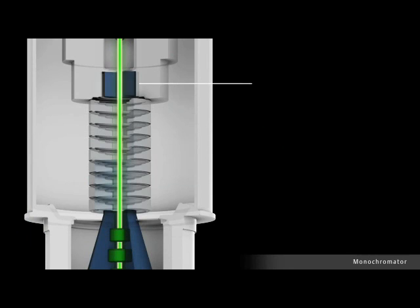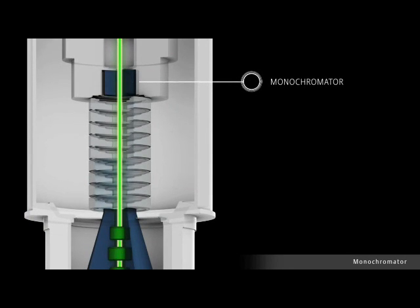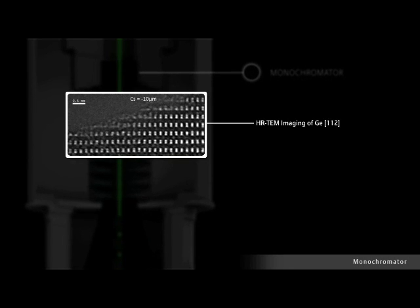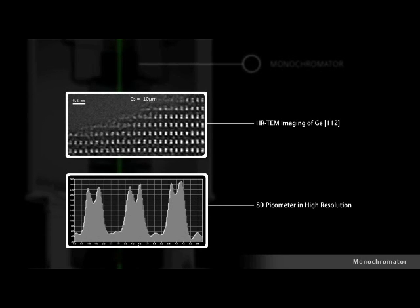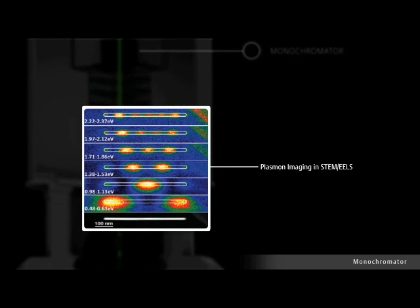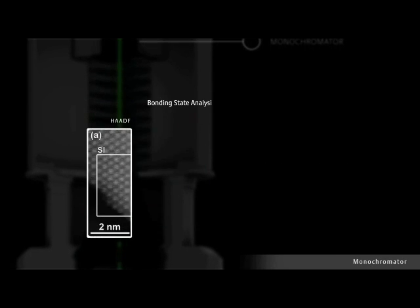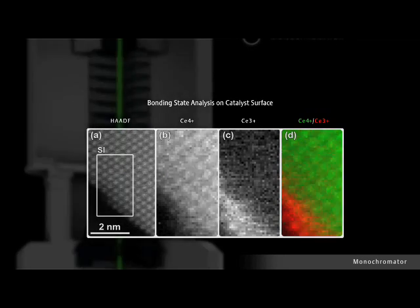Below the electron source is the monochromator, which narrows the energy spread of the electron source down to as low as 100 millielectron volts. This boosts the lateral resolution and high-resolution TEM imaging to 70 picometers and enables the spectroscopic study of electronic structures, as shown here in this sample of Germanium-112 resolved to 80 picometers, in plasmonics, as shown in this visualization of plasmon structures of silver nano-antennas, and in chemical bonding, as shown in this atomic resolution oxidation state analysis on ceria catalyst surfaces.